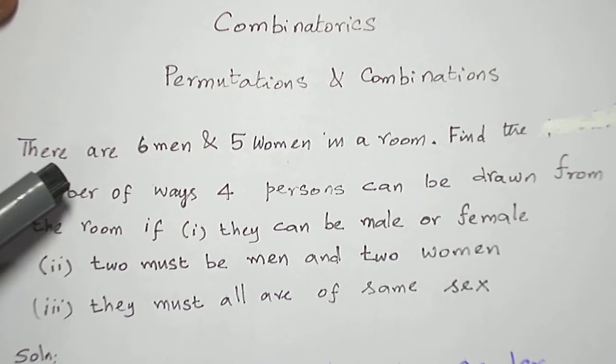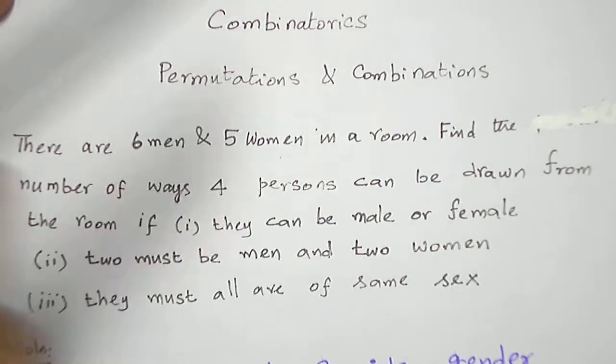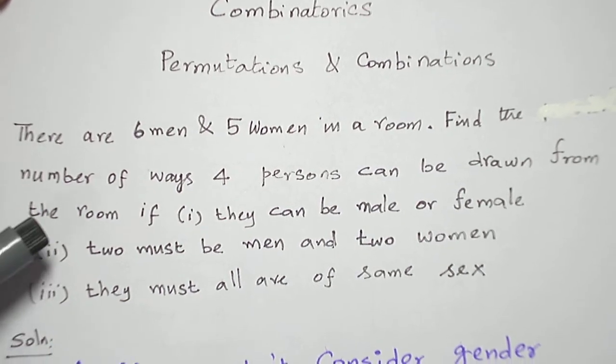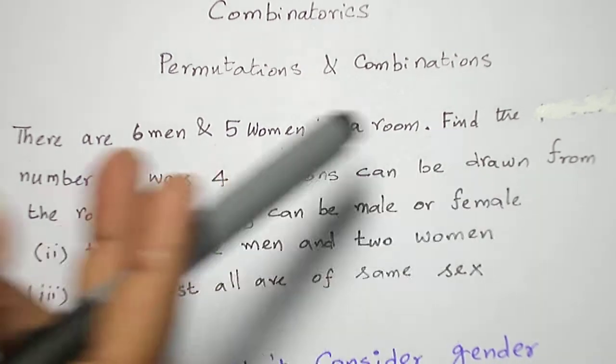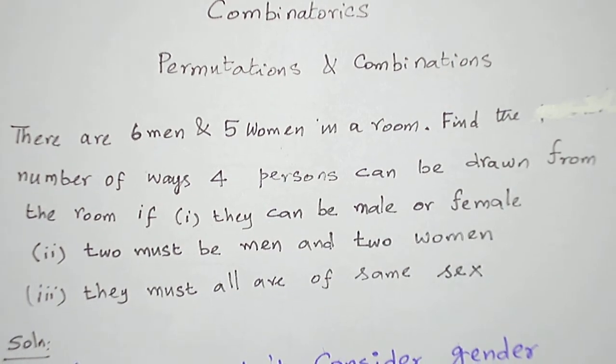First let me read the question. There are six men and five women in a room. We are asked to find the number of ways of drawing four persons with certain conditions.